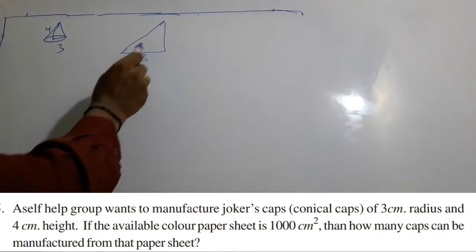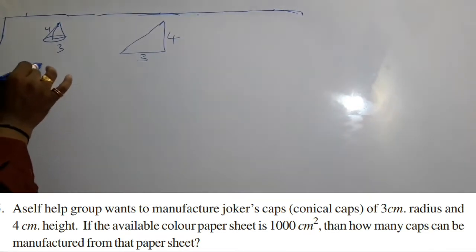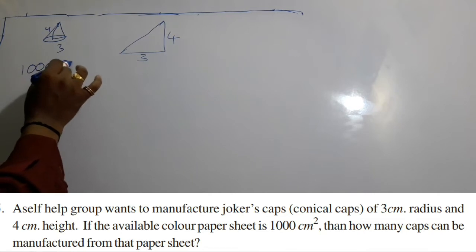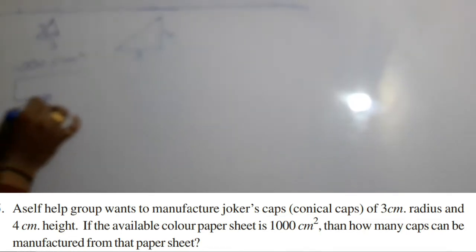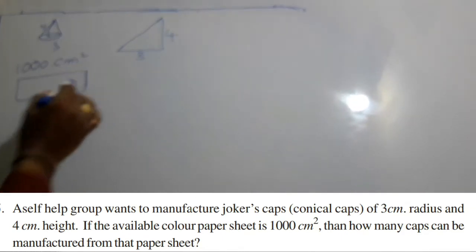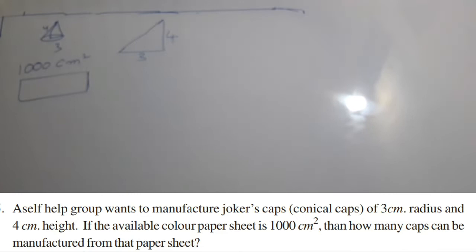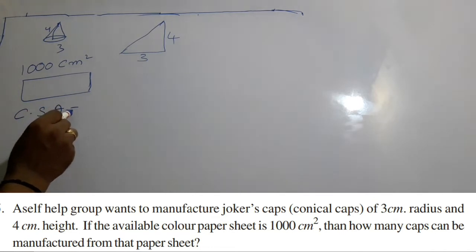The radius is 3 centimeters and height is 4 centimeters. We have 1000 square centimeter paper available. So this paper sheet is 1000 square centimeters available. How many caps can be made? The first question is to find the lateral surface area or curved surface area of a cone.